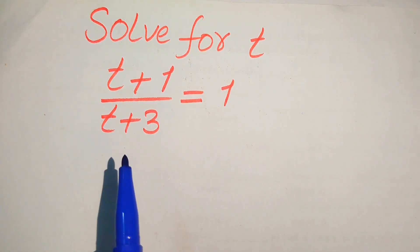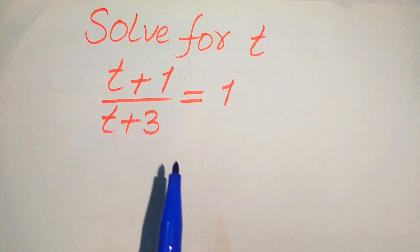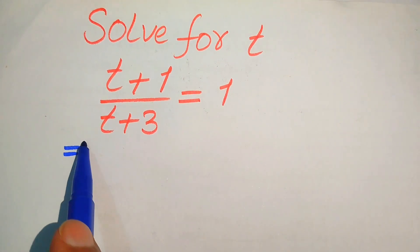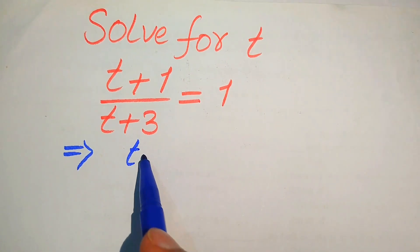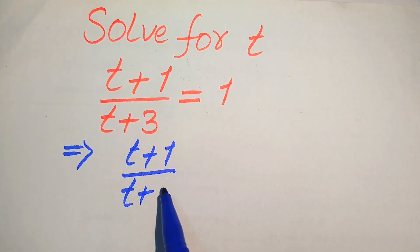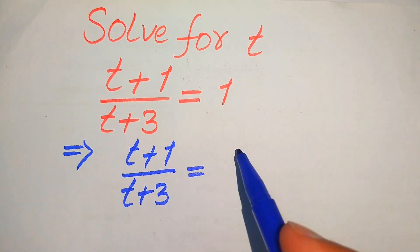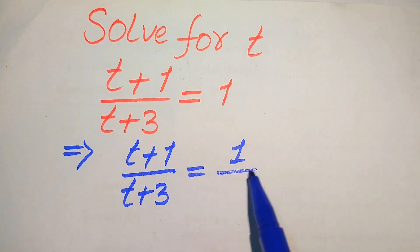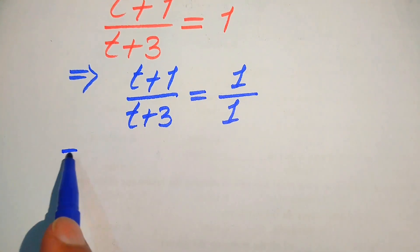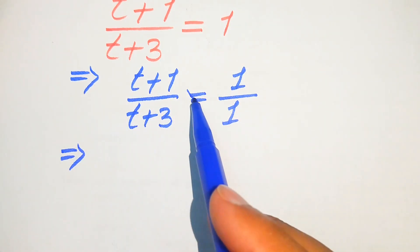So here, the very first thing we are going to do is, you see that the denominator on the right-hand side is 1. So we rewrite this equation as t plus 1 divided by t plus 3 equals 1 divided by 1, and now in the next step we need to cross multiply the terms.